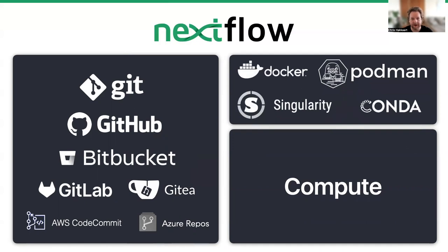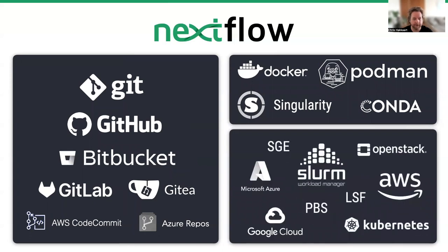Nextflow also has automatic integration with your favorite software managers, including Docker, Podman, Singularity, and Conda, which is important for portability and reproducibility. For compute, Nextflow will allow you to scale your pipeline across all of your favorite HPC and cloud providers, such as SGE, Slurm, as well as Microsoft, Google, and AWS.